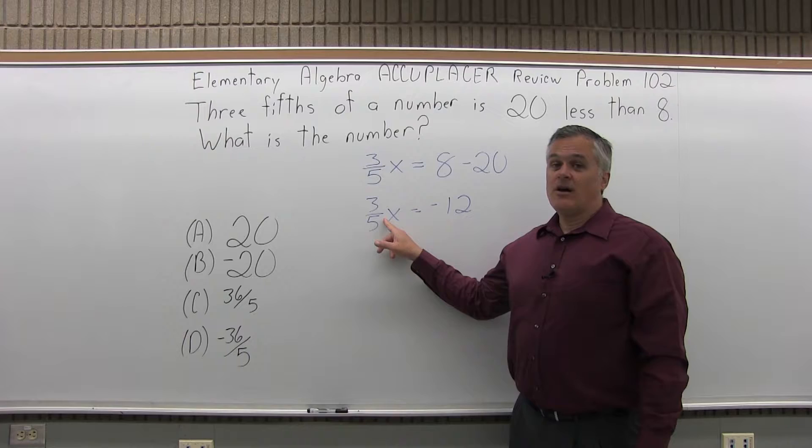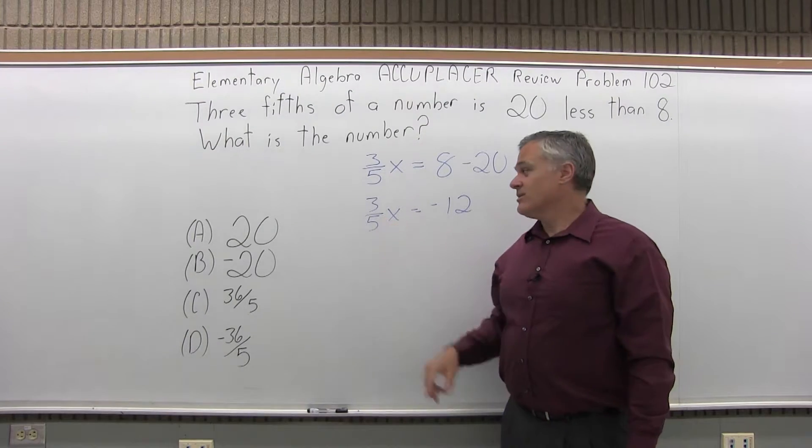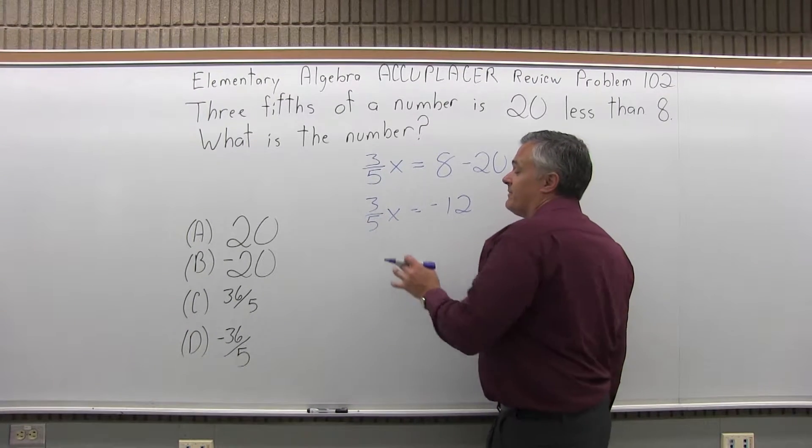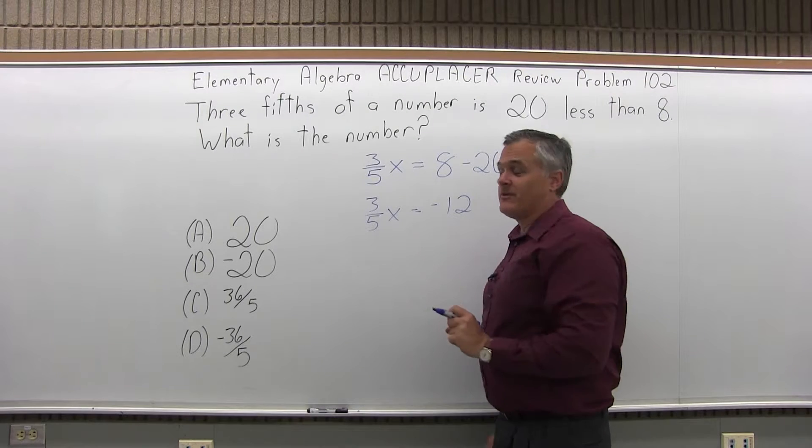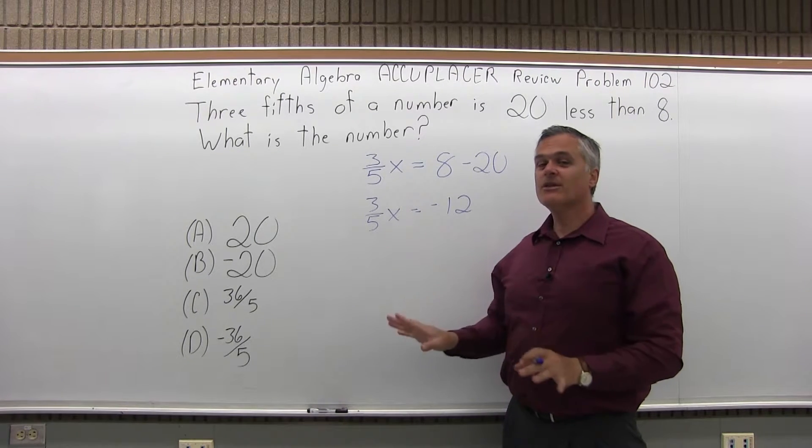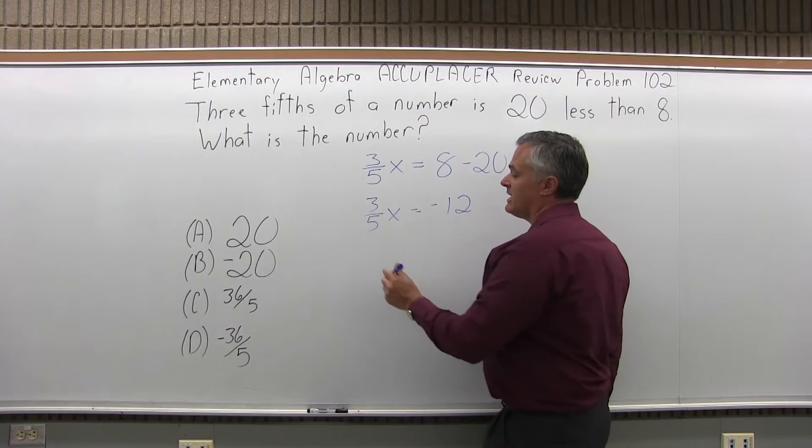Now what makes this kind of tough is the three-fifths in front of the x. That looks kind of crazy, but it's easy enough to get rid of. Keep in mind this is an equation, it's equals. I can do anything at all as long as I do the same thing on both sides.